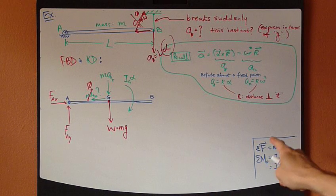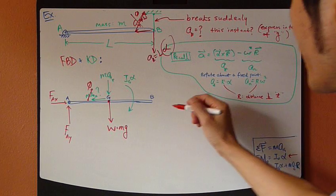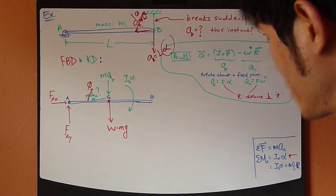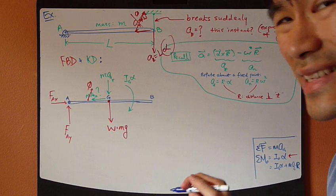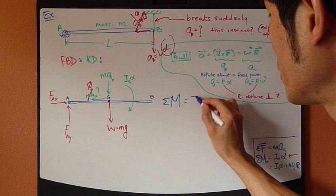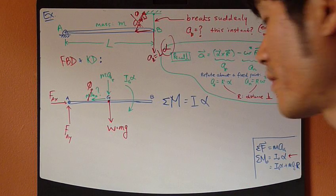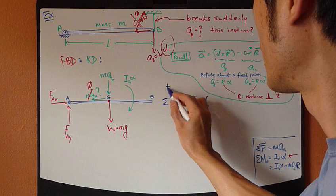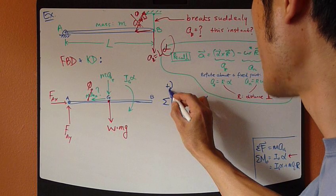So, next, apply this moment equation. So, first, write down the equation. Sum of moment equals I-alpha. So, I'm going to define positive as being clockwise.